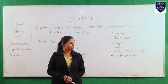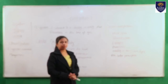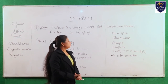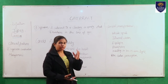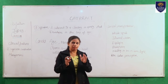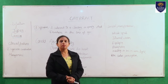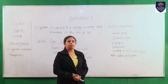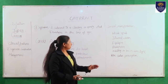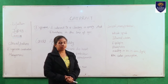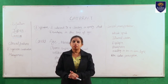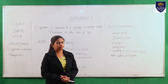Now I will discuss clinical manifestations seen in the patient of cataract. White spot — we will see a white spot in the eye. Blurred vision — the person cannot see clearly. Diplopia means double vision. Photophobia means fear of light. Inability to see in dim light. Decreased color perception — the patient cannot identify some colors.